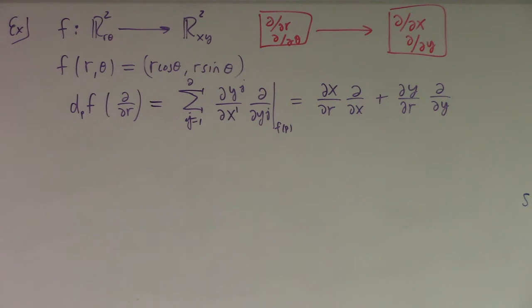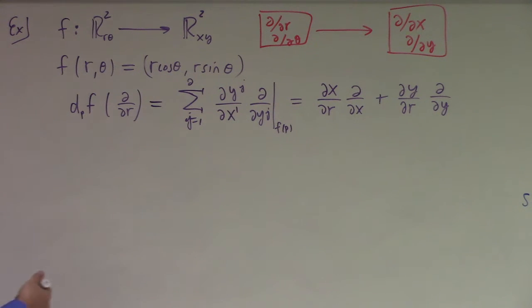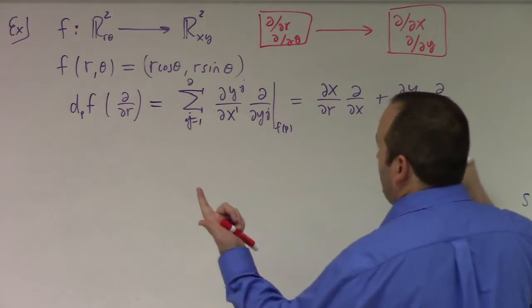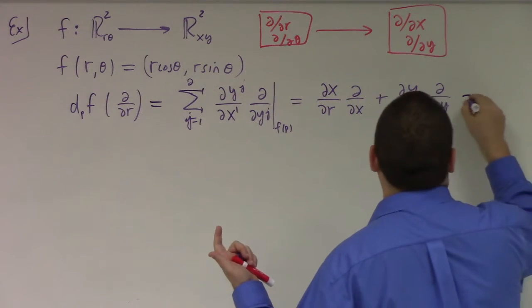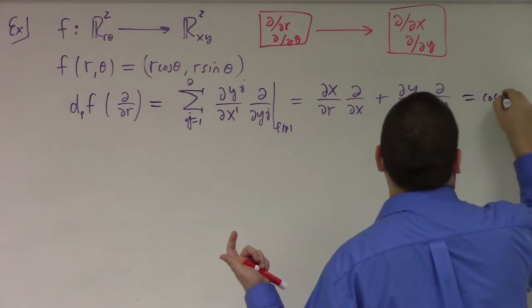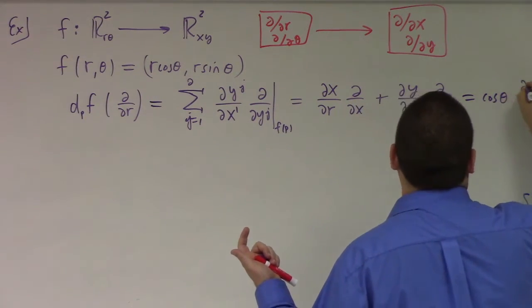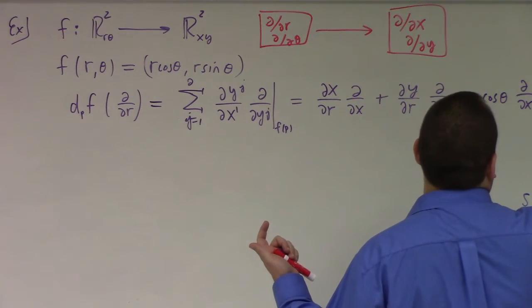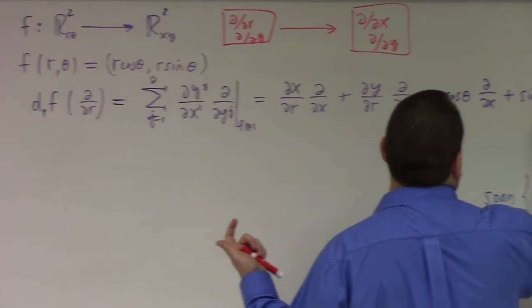Again, x1 is my first coordinate, which is r on the domain. And we can calculate this here. What is partial x over partial r? It's cosine theta, times partial partial x, plus sine theta times partial partial y.